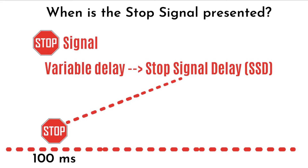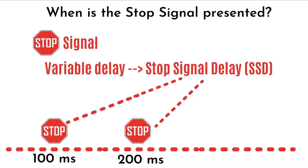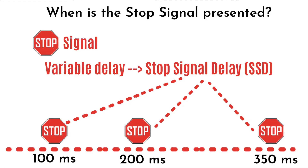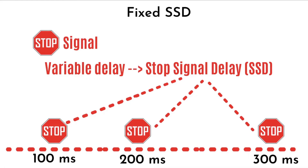The Stop signal is introduced at a variable delay, usually referred to as the Stop Signal Delay, or SSD for short. In this schematic, we see that for one stop trial the SSD occurred at about 100ms, in the next trial at 200ms, then at 350ms, and so on. Note that in some studies the SSD can be fixed — presented at fixed delays such as 100ms, 200ms, 300ms, and so on.